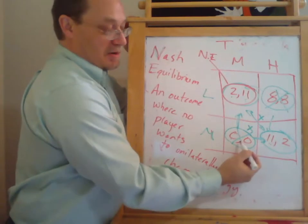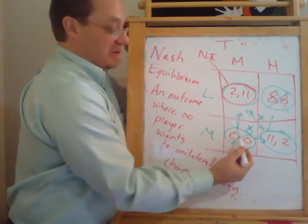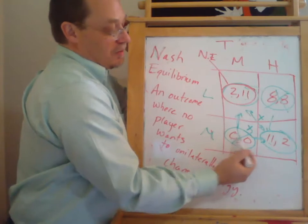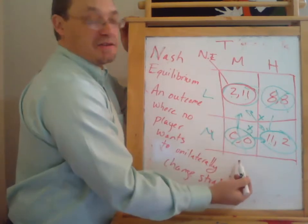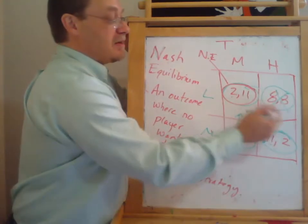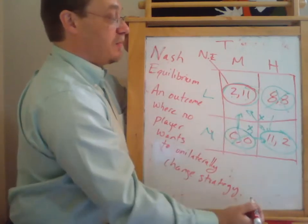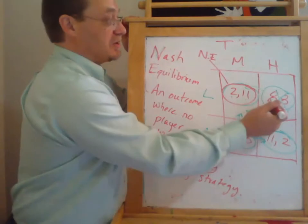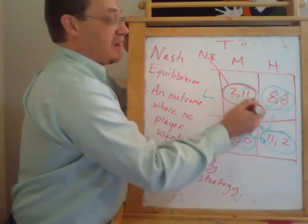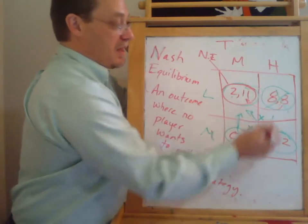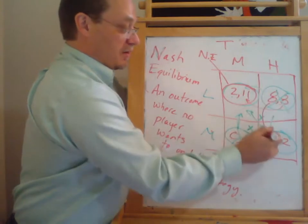What about down here? No, this isn't a Nash Equilibrium. Either player would benefit by switching strategies. Likewise up here, this one's not a Nash Equilibrium because both players would benefit by switching strategies because Target would rather get eleven than eight, and Kmart would also rather get eleven than eight.